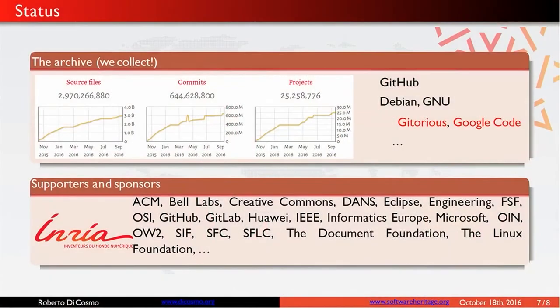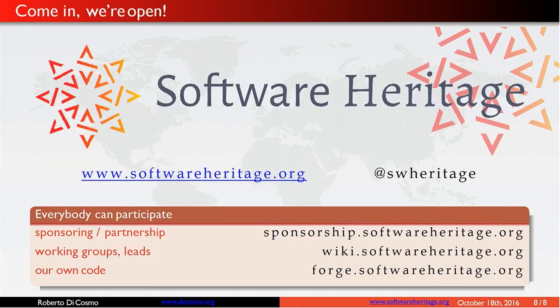We started our work over a year ago. If you look at the numbers on the website — I encourage you to go have a look — we already have over 3 billion unique source files archived, and we aggressively deduplicate everything. Over 600 million commits from more than 25 million projects. And importantly, it's not just a copy of GitHub — there are many of those around. We also have all the history of Debian, all the history of GNU, and we managed, thanks to very helpful people, to salvage a copy of Gitorious and Google Code before it was too late. The project was started by INRIA, the national institute of research in computer science in France, and we now have many people sharing our vision and turning into sponsors.